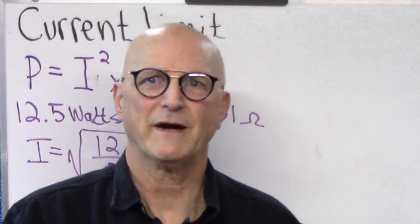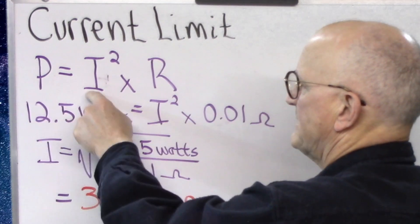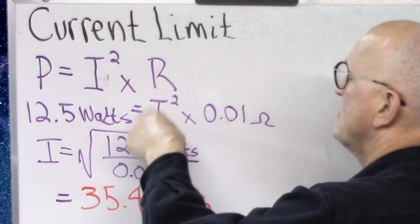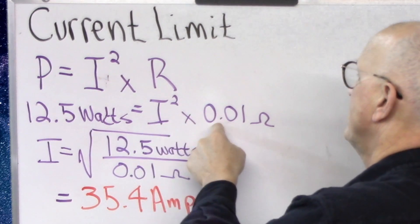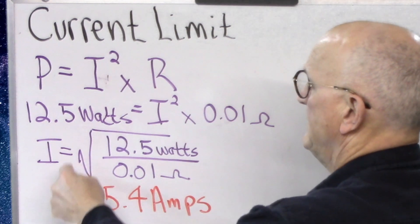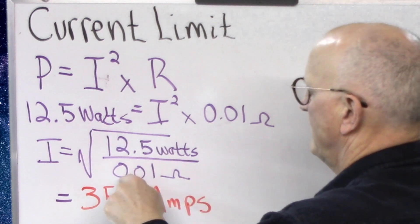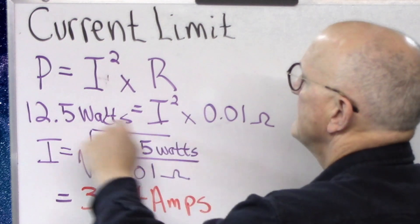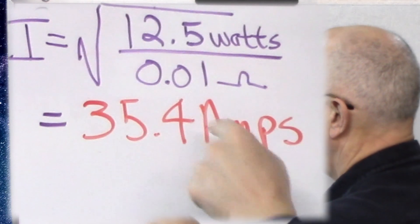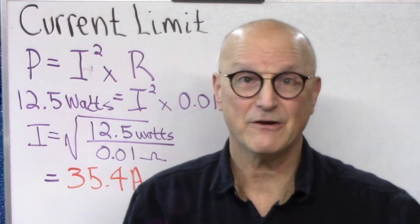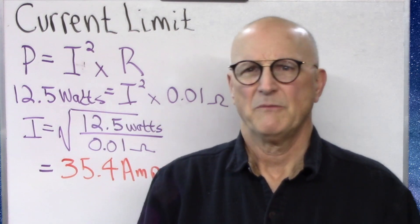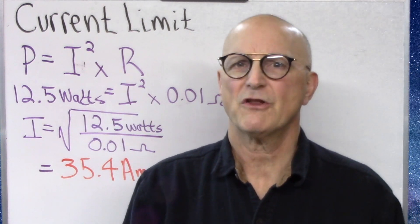So let's do the calculation for my test subject. We already know that power is equal to the square of the current times the resistance. So we have 12.5 watts is equal to the square of the current, which we don't know yet, times the resistance 0.01 ohms. So we do a little mathematical magic. We have current is equal to 12.5 watts divided by 0.01 ohms. Take the square root of that whole thing. And we come up with a current limit of 35.4 amps. Well, I'm not going to go anywhere near that level. In my case, my power supply is only rated to 5 amps. But I'd like not to even push this. So I think I'm going to use 3 amps.